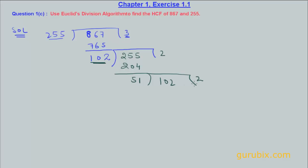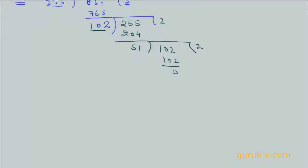Here it goes 2 times and the remainder is 0 at this stage. So by Euclid's division algorithm, the divisor will be the HCF of the two numbers.